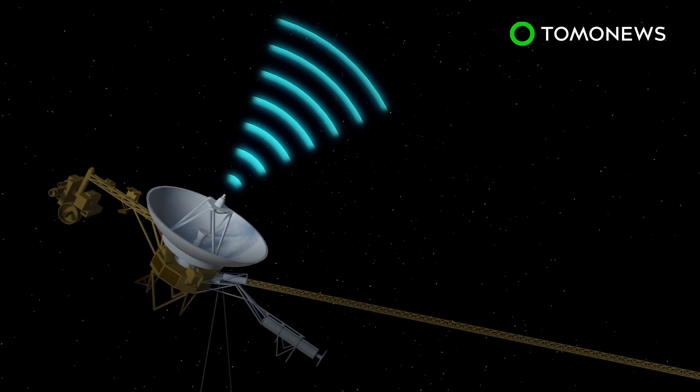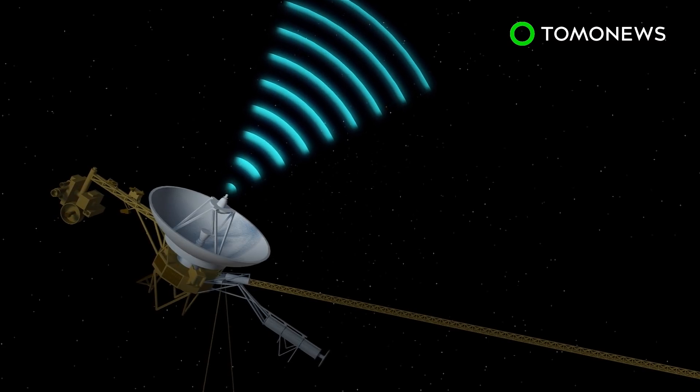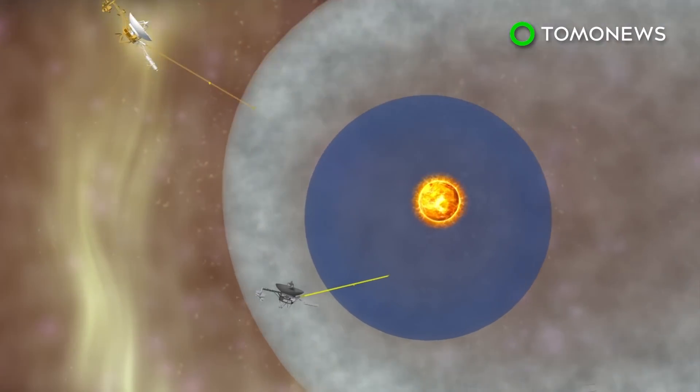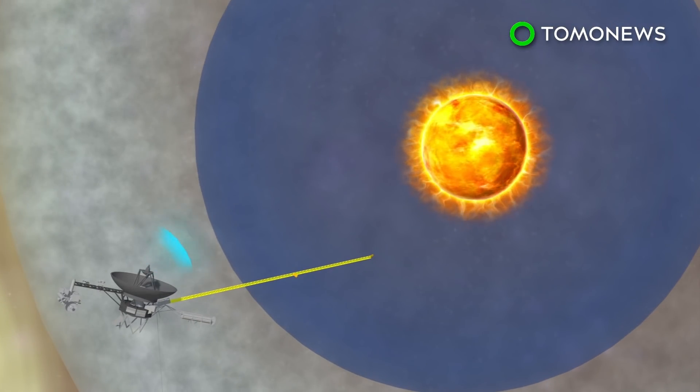It is still transmitting data at a distance of almost 13 billion miles away from Earth. Voyager 2 is in the space known as the Heliosheath, almost 11 billion miles from Earth. That spacecraft is expected to enter interstellar space in the next few years.